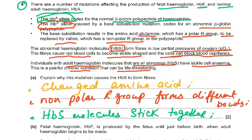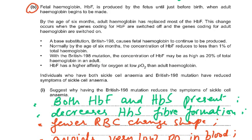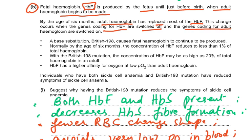Why does this mutation cause HbS to form fibers? Because you have a changed amino acid — a non-polar R-group forms different bonds, so HbS molecules stick together. HbF fetal hemoglobin is produced by the fetus until just before birth, when adult hemoglobin begins to be made. By the age of six months, adult hemoglobin has replaced most of the HbF. This change occurs when the gene coding for HbF is switched off and the gene coding for adult hemoglobin is switched on.